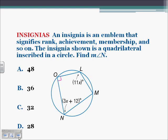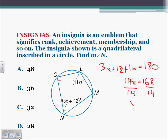An insignia is an emblem that signifies rank, achievement, or membership. The insignia shown is a quadrilateral inscribed in a circle. Find the measure of angle N. Since N and L are opposite angles in an inscribed quadrilateral, they must add up to 180. So 3x plus 12 plus 11x plus 12 equals 180. Combining like terms and subtracting: 14x equals 168, and dividing both sides by 14 gives x equals 12.